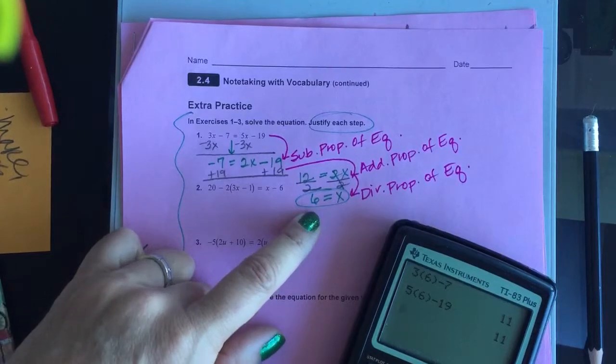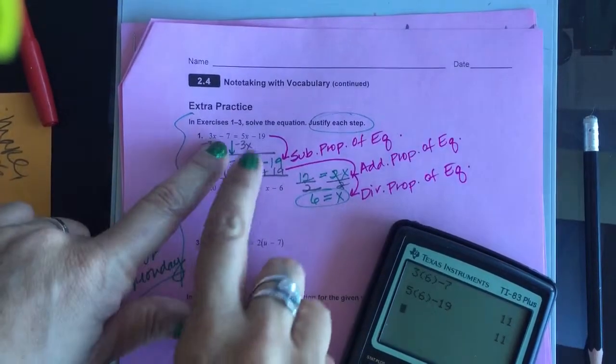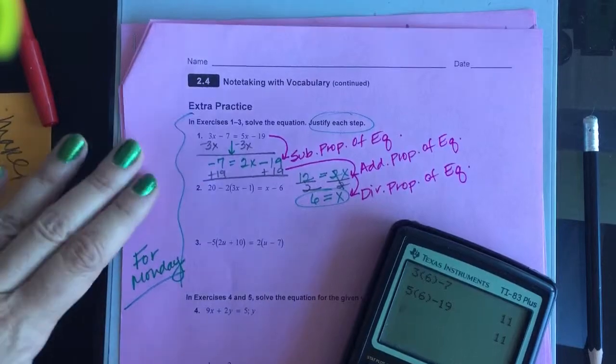I checked my answer using substitution. Cool? Substitution is when we go back and plug it in to see if we were right. And when I did, I got 11 equals 11. So I know that my math was right.